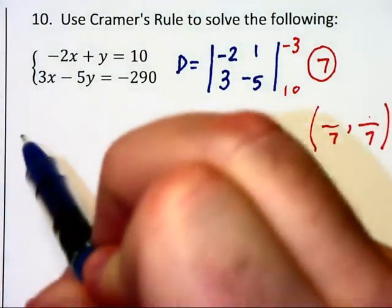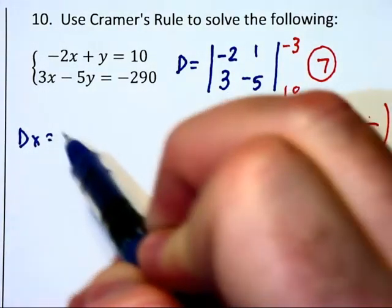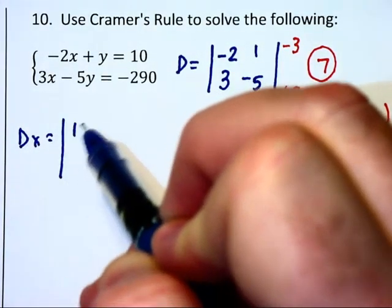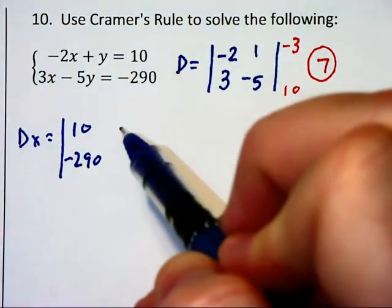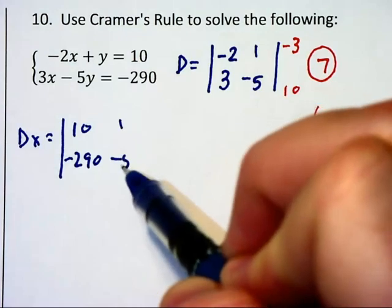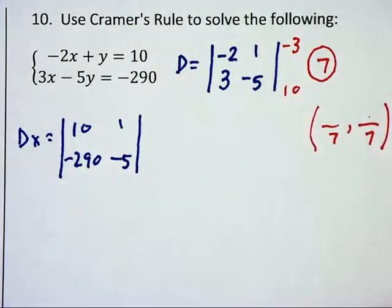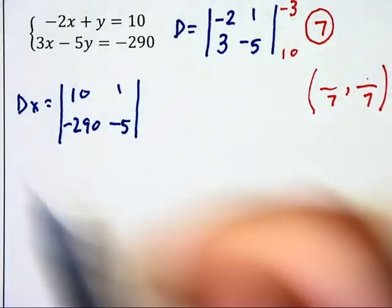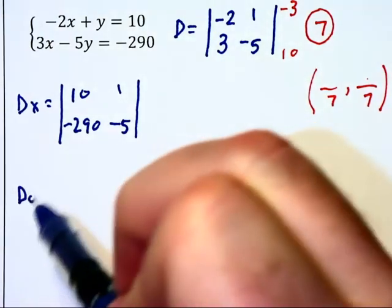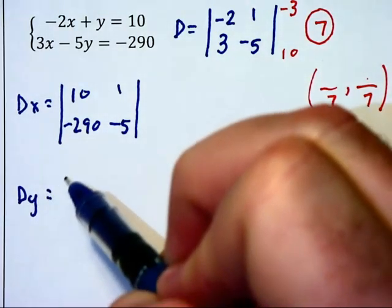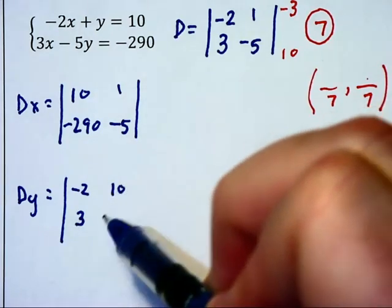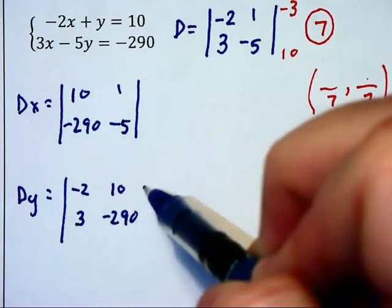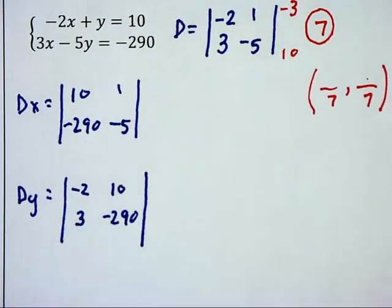and I need dx and dy for those two numerators. So let's begin by finding dx. dx will have the 10 and the negative 290 in that first column, with the 1 and negative 5 in the second column. And dy will keep the first column as negative 2 and 3,